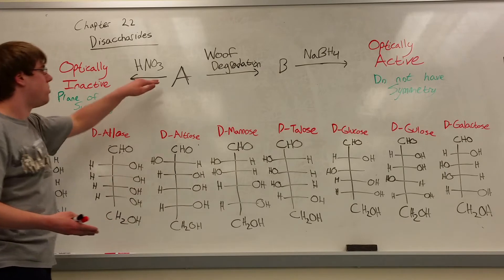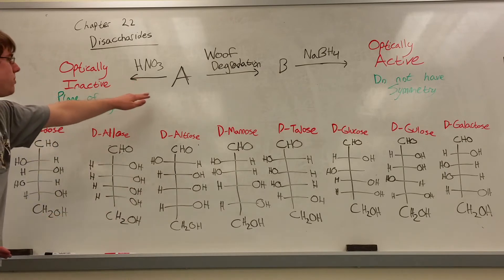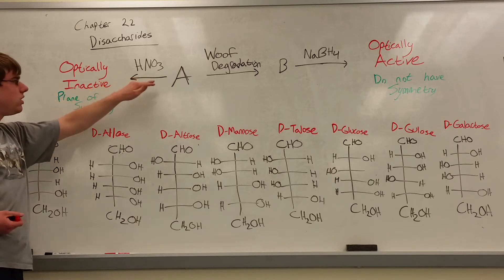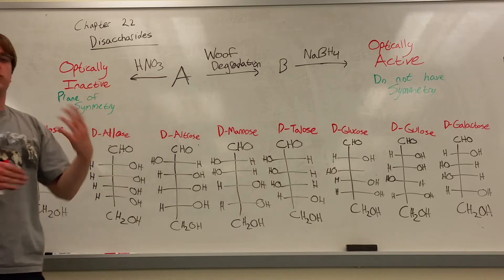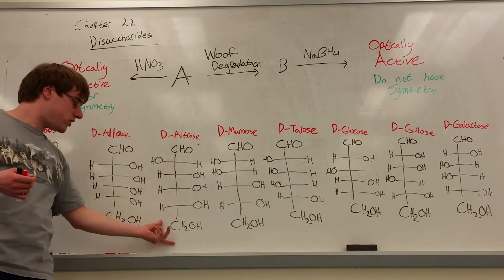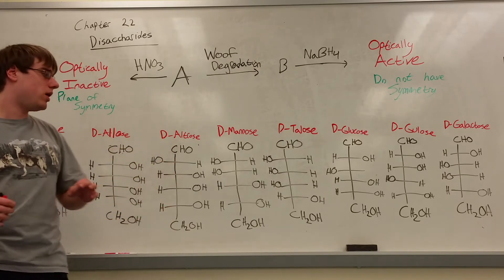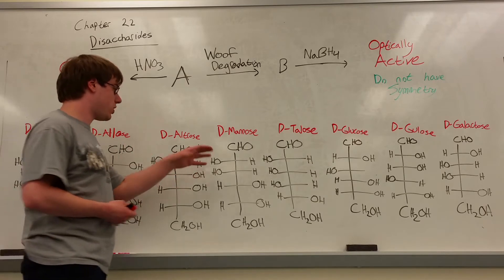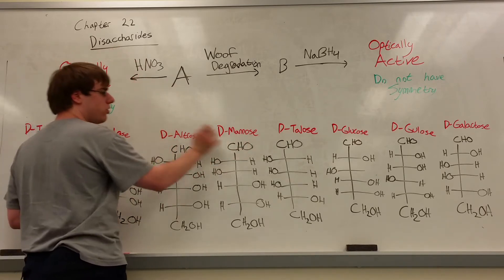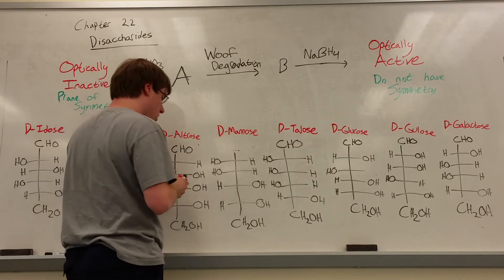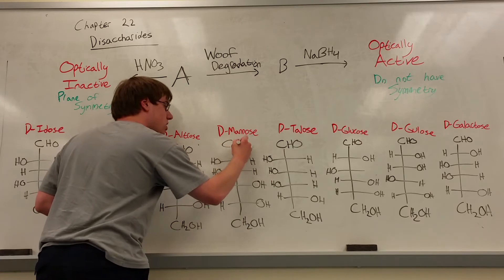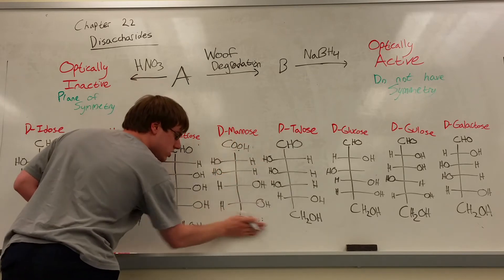Let's go through step A — reacting with HNO3, which as we saw in our general reactions video turns the CHO group and the CH2OH group into COOH. So D-mannose reacted with HNO3 would end up with COOH on both ends.